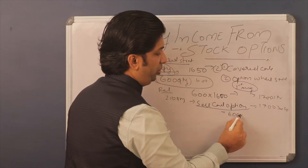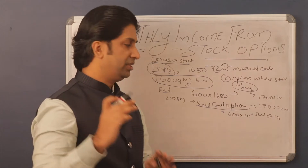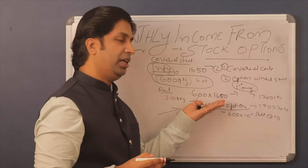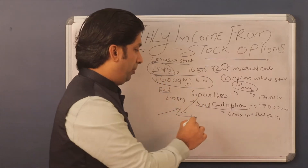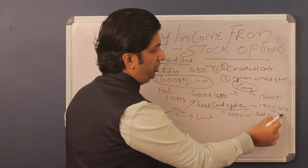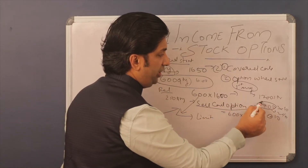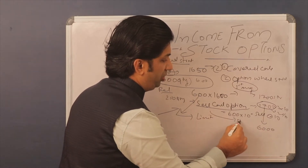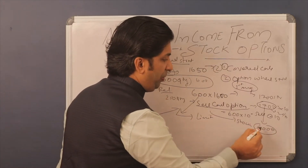The lot size is 600, so 600 into 10 means you collect 6,000 rupees. When the Infosys price increases, you get the benefit from the stocks because your stock price goes up. However, there is a limit to this profit — when it reaches 1700, the call option may be trading at 20 or 30 rupees, so you will lose some points on the call side. But if the price closes below 1700, you keep the full 6,000 rupees plus the profit from the stocks.